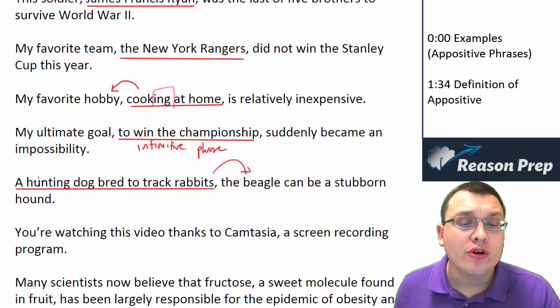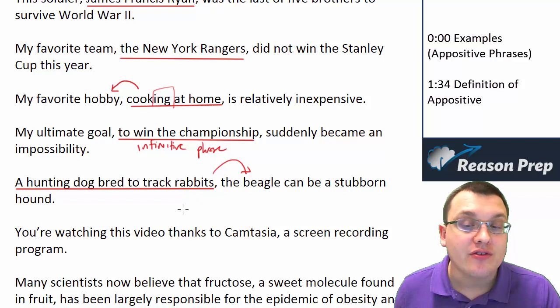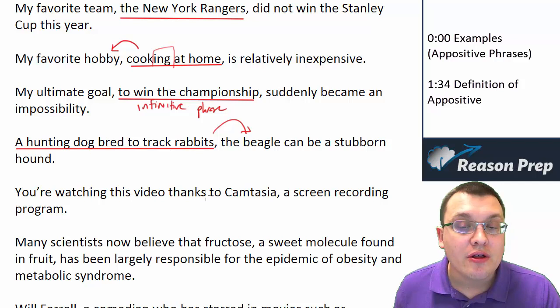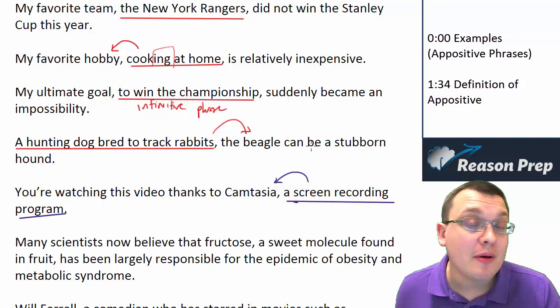Notice we only use one comma because we're attaching it to the beginning of the sentence, not inserting it in the middle. We could have said 'The beagle, a hunting dog bred to track rabbits, can be a stubborn hound' — that would have been fine as well. 'You're watching this video thanks to Camtasia, a screen recording program.' Here the appositive phrase is at the end of the sentence, describing or defining what Camtasia is. And here again we only use one comma because it's at the end of the sentence.